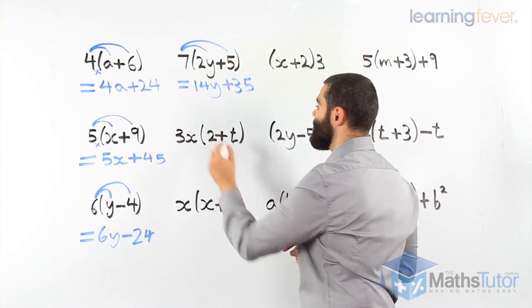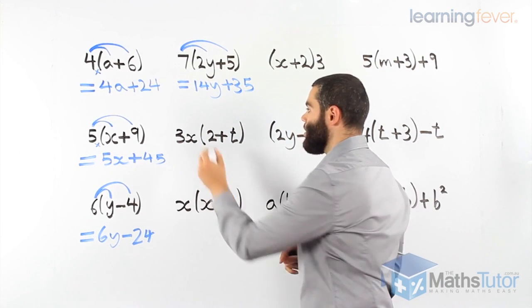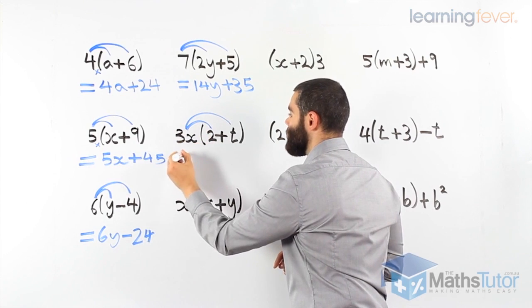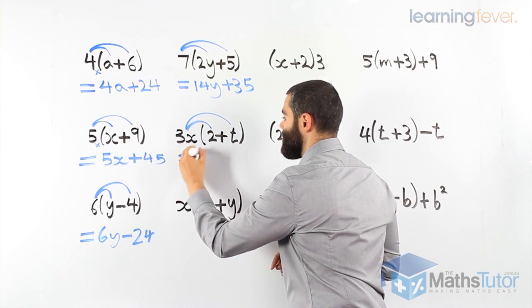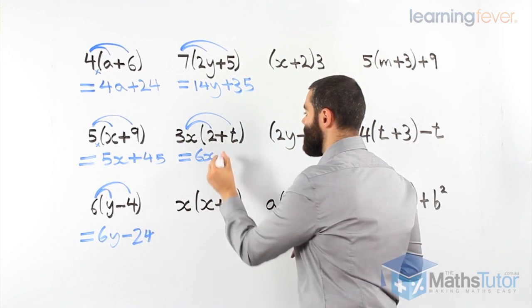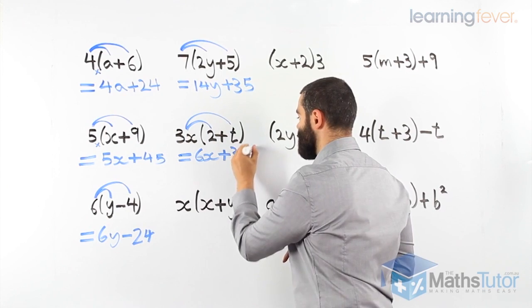Three x times everything inside the brackets. We have the invisible times over here. Three x times two, and three x times t. Three x times two is six x. And three x times t, three x t.